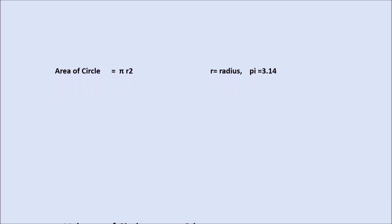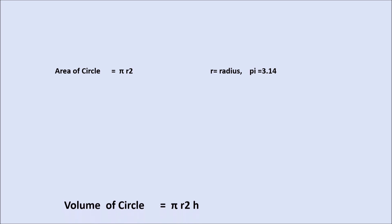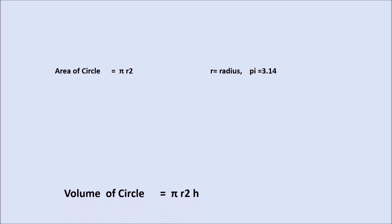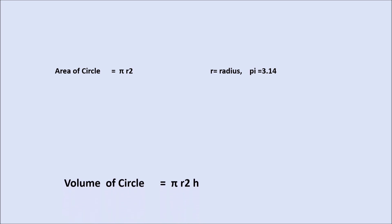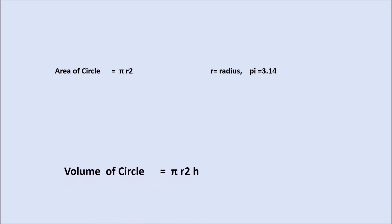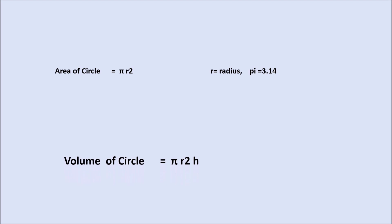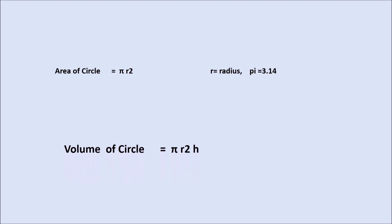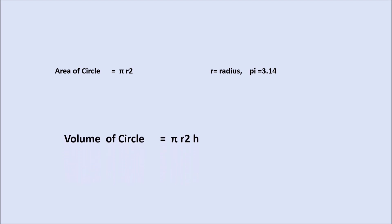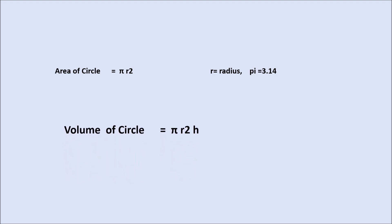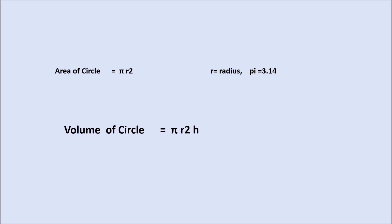The formula is pi r squared. If we have a radius, we can multiply by the cylinder radius and multiply by 3.14. That height is 3.4 meters. That is the volume.